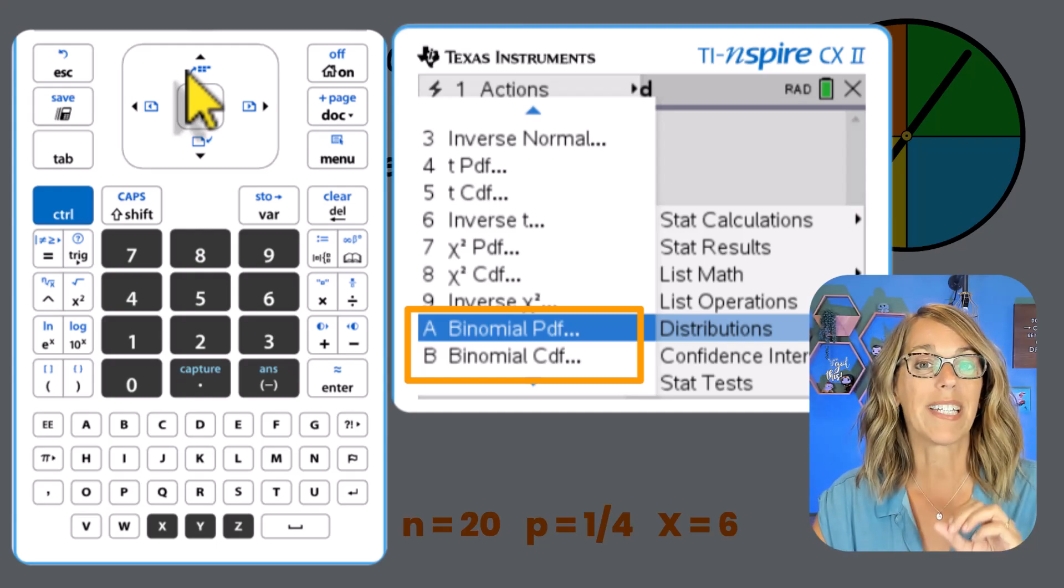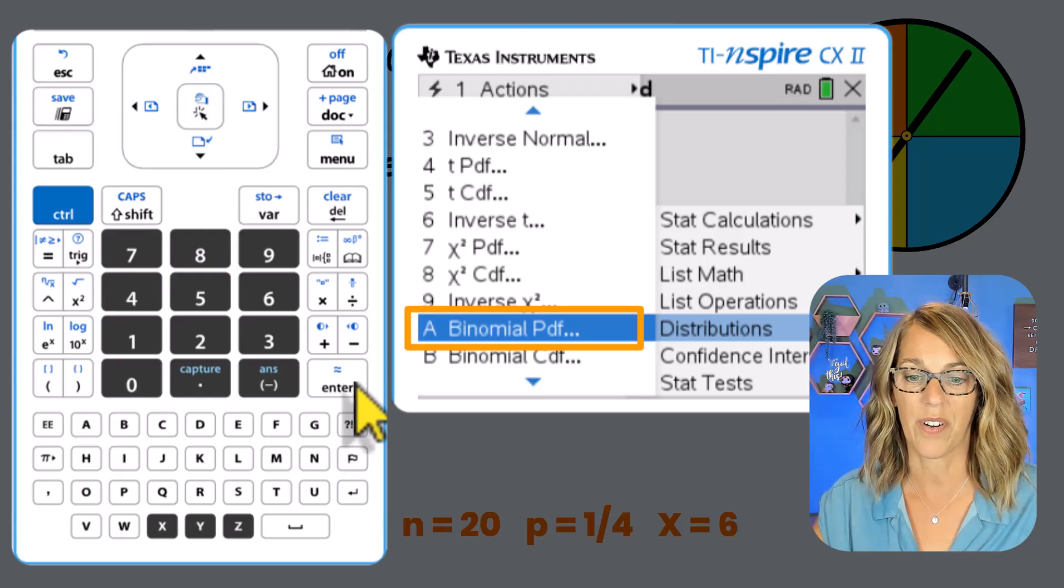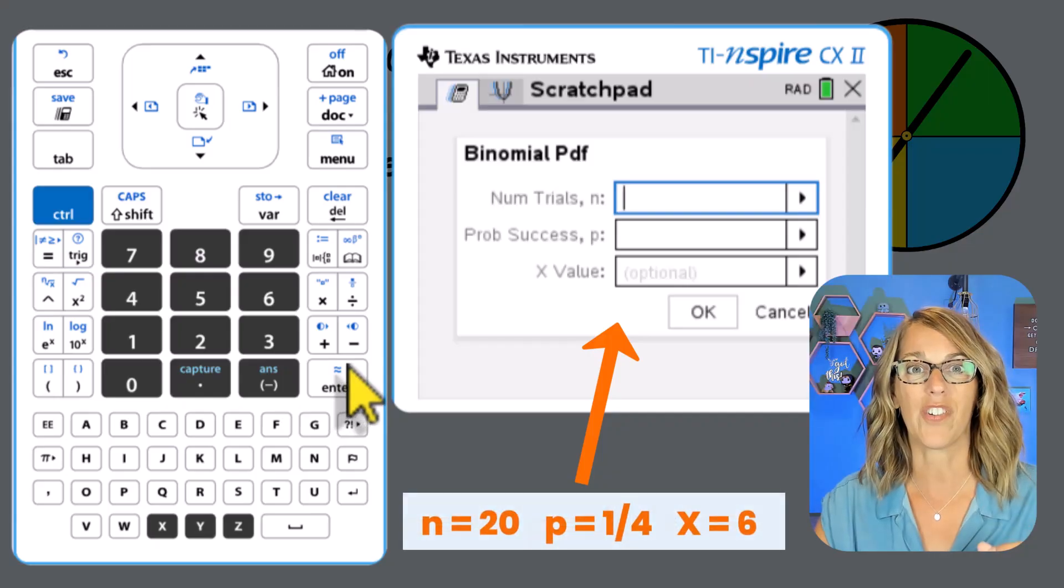And I also have the binomial CDF, which is a cumulative distribution. We're going to do the PDF first. Let's choose that and hit enter.